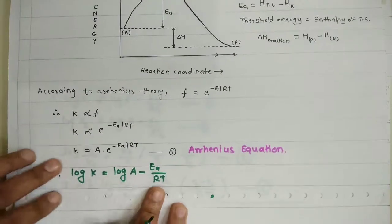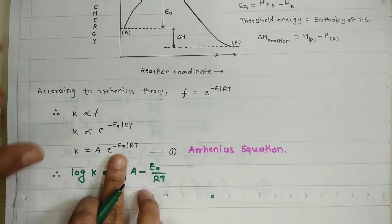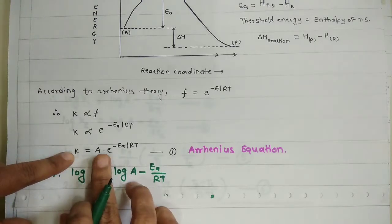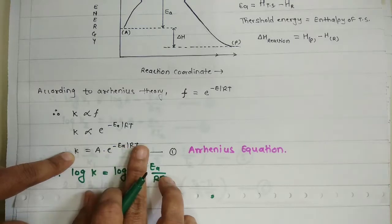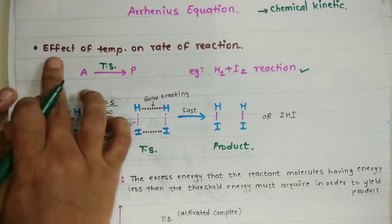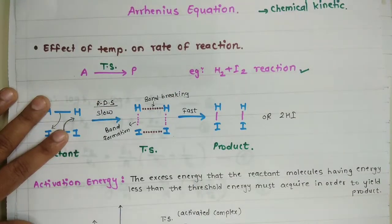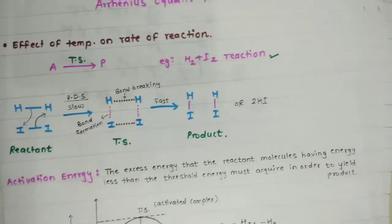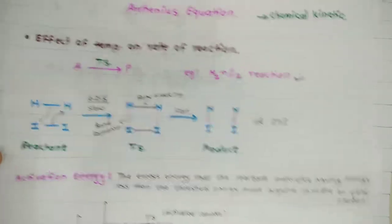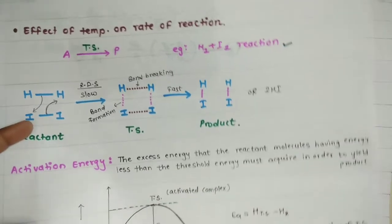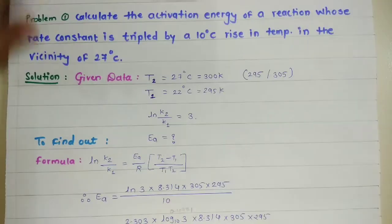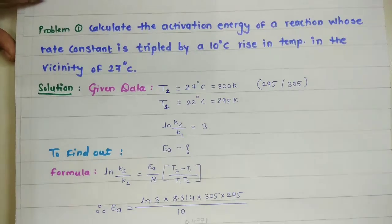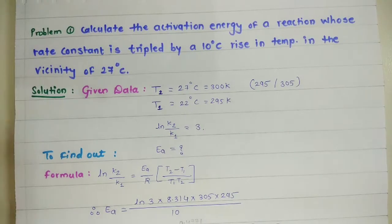The Arrhenius equation is now complete. The main equation is k = A·e^(−Ea/RT), which shows the effect of temperature on rate of reaction. Now we will go through one problem on activation energy. Problem 1: Calculate the activation energy of a reaction whose rate constant is tripled by a 10°C rise in temperature, in the vicinity of 27°C.